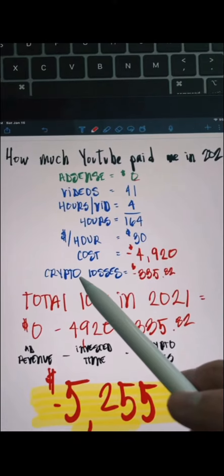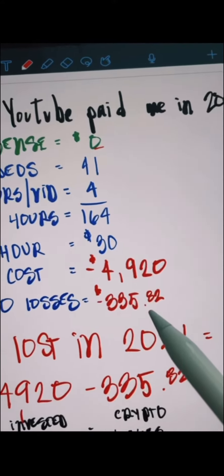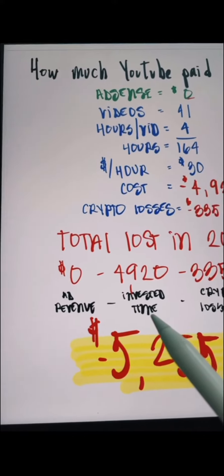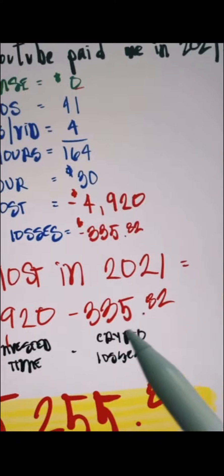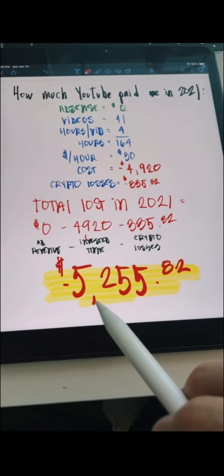With that, I spent some money on crypto as well, so I lost a total of $335.82. My ad revenue minus my invested time: $4,920. My crypto loss: $335.82. Total: $5,255.82.